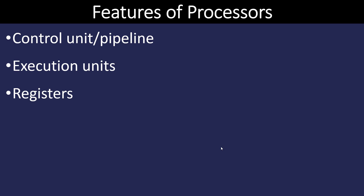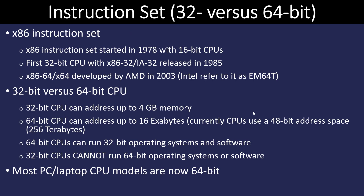Intel and AMD have many different types of features, but common to both of them are the control unit, pipeline, execution units, and registers. The control unit is the part of the processor that fetches the next line of instruction in sequence from the RAM. The execution unit is where the execution of the instruction takes place. And lastly, we have the register.